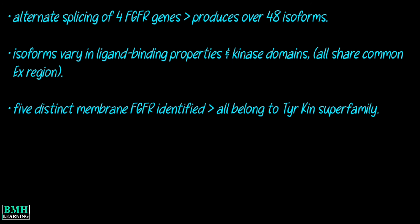The natural alternate splicing of four Fibroblast Growth Factor Receptor genes results in the production of over 48 different isoforms of FGFR. These isoforms vary in their ligand binding properties and kinase domains; however, all share the common extracellular region composed of three immunoglobulin-like domains, and thus belong to the immunoglobulin superfamily.